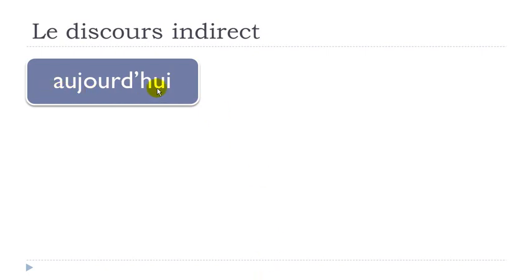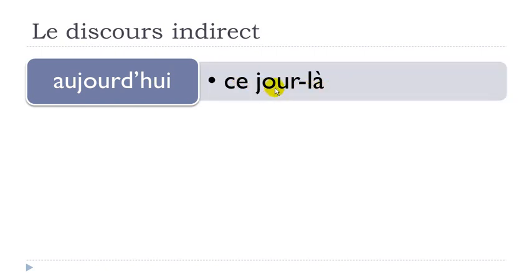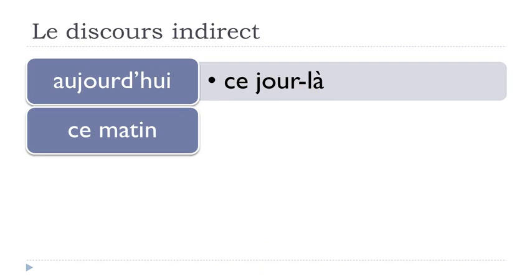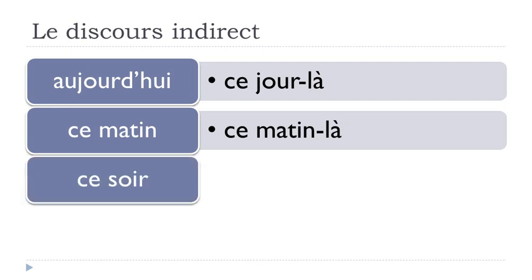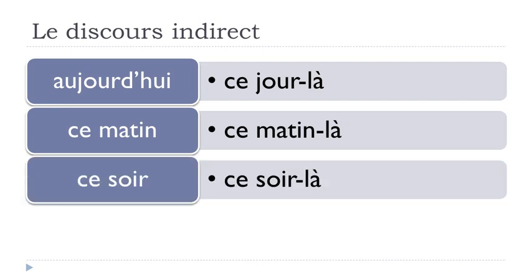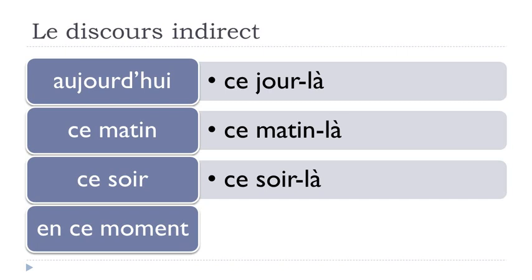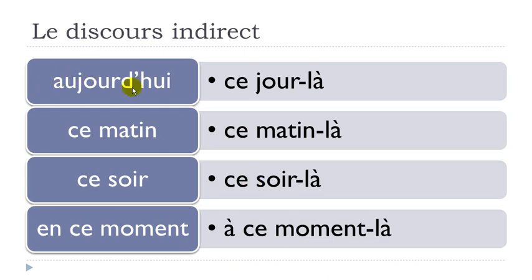Aujourd'hui (today) becomes ce jour-là in the discours indirect. Ce matin (this morning) becomes ce matin-là. Ce soir becomes ce soir-là. En ce moment (at this time) becomes à ce moment-là. So remember: aujourd'hui → ce jour-là, ce matin → ce matin-là, ce soir → ce soir-là, en ce moment → à ce moment-là.